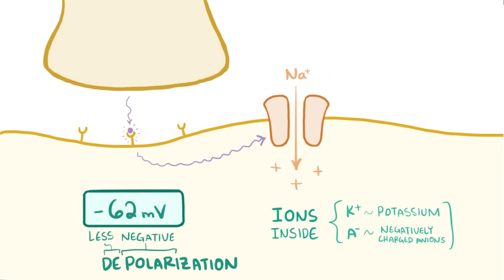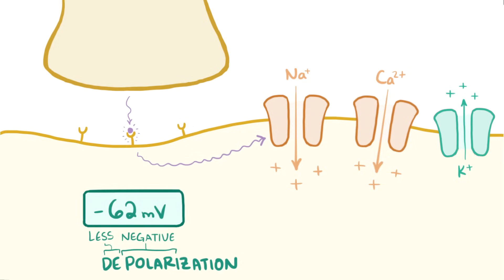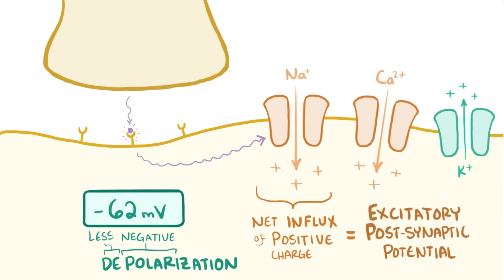Neurotransmitters typically open various ligand-gated ion channels all at once, so ions like sodium and calcium might flow in, while other ions like potassium might flow out, which would actually mean some positive charge leaves the cell. In the end though, when it's all added up, if there's a net influx of positive charge, then it's called an excitatory postsynaptic potential, or EPSP.